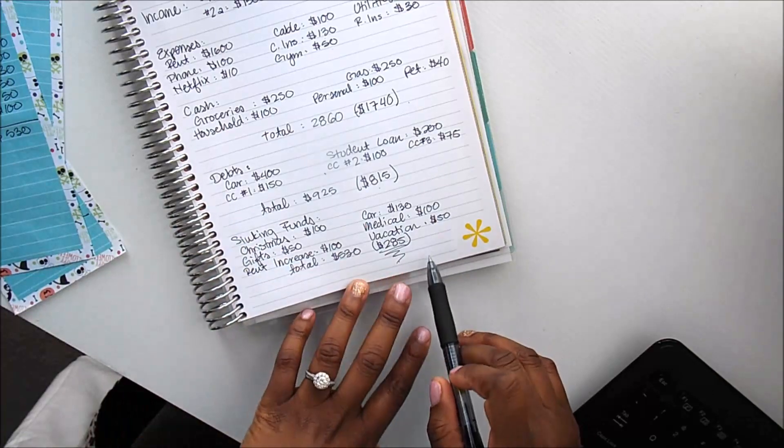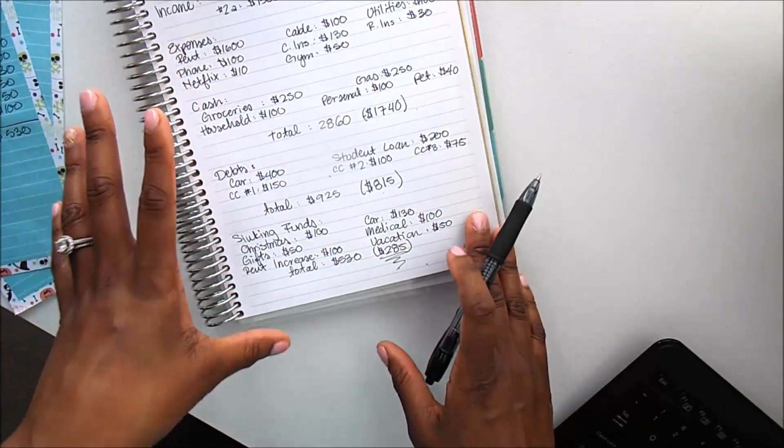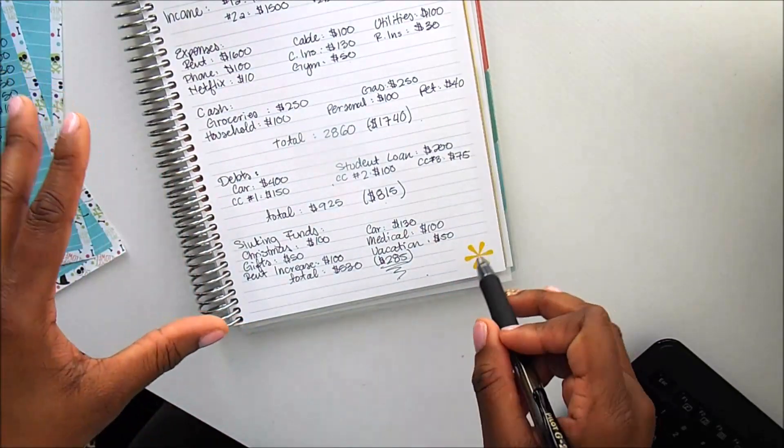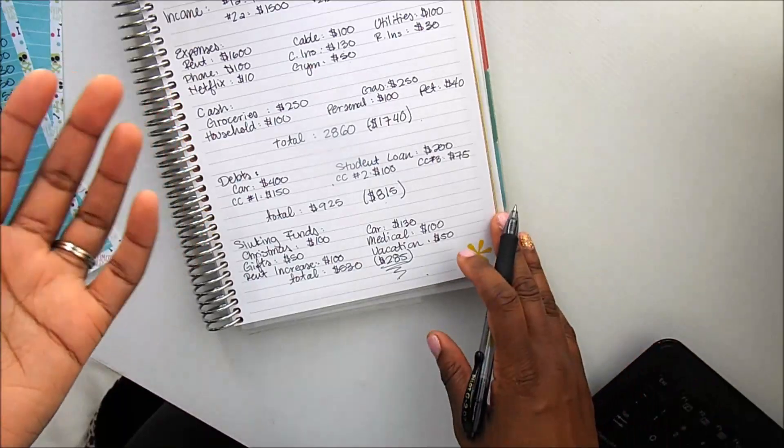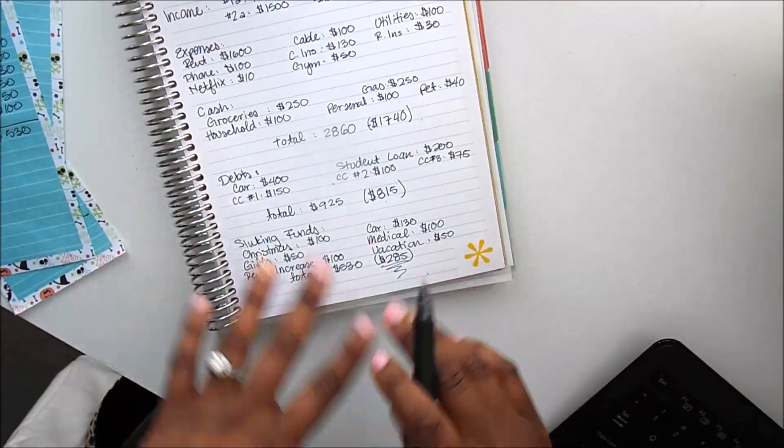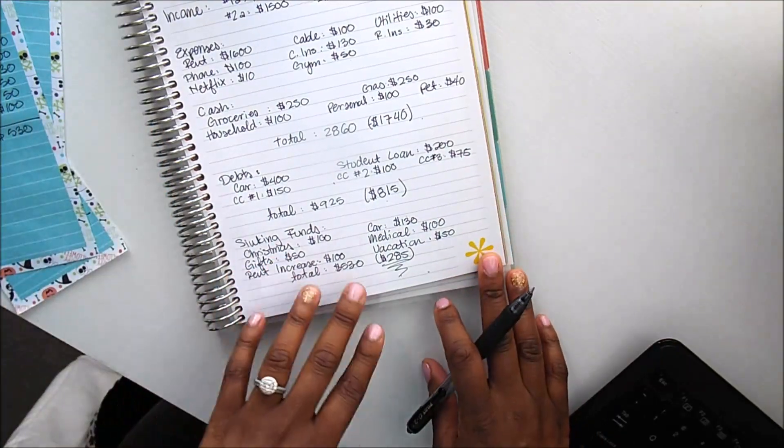So I would encourage you guys, if you have an irregular income, to really write it out because that helps so, so much. And in order for you to know what you have coming in or going out, you have to have it written down. So I hope this has been helpful, guys. This was quick and easy and just really simple. So if you have any questions, definitely let me know.